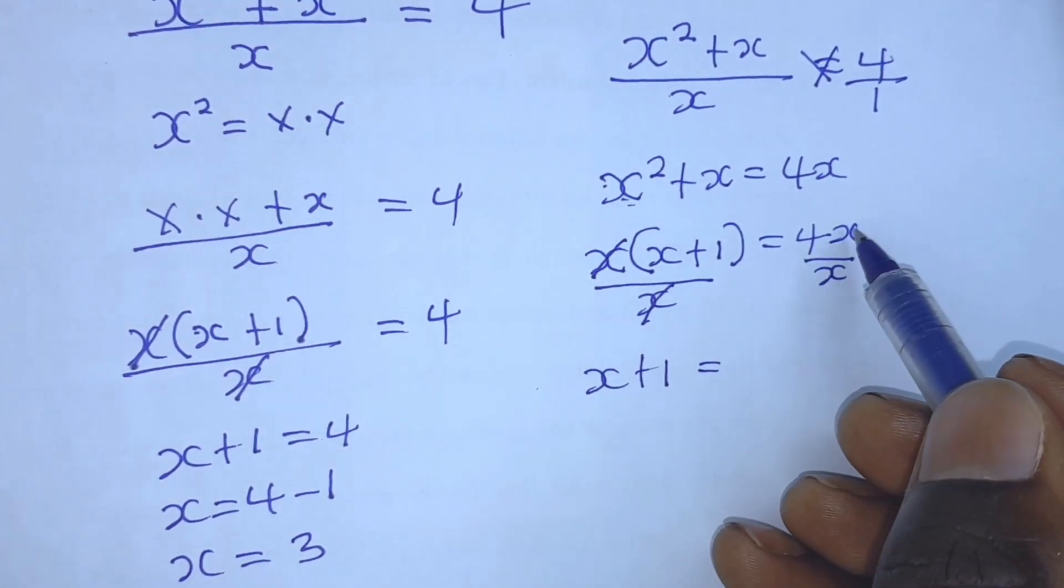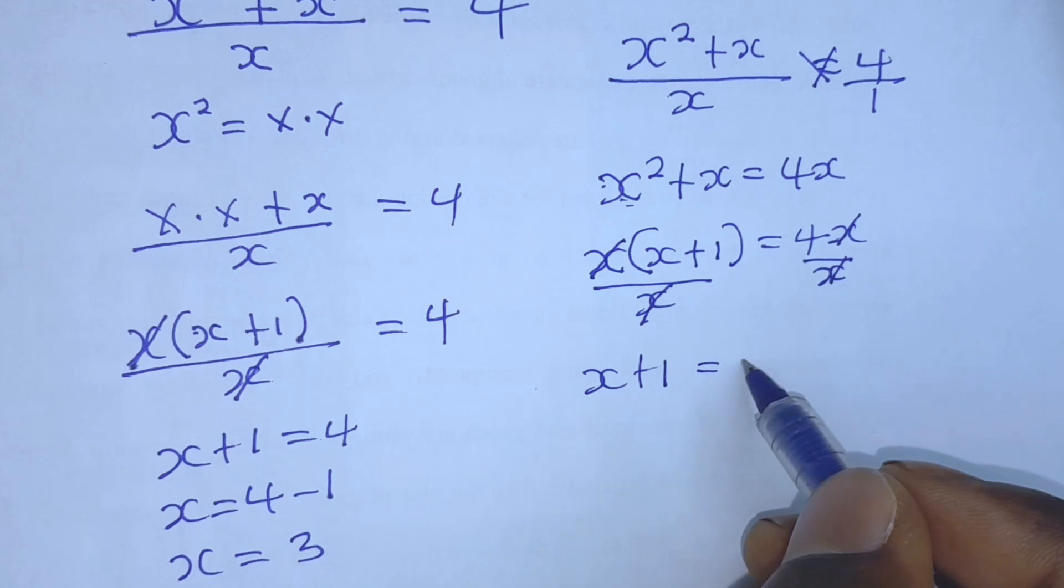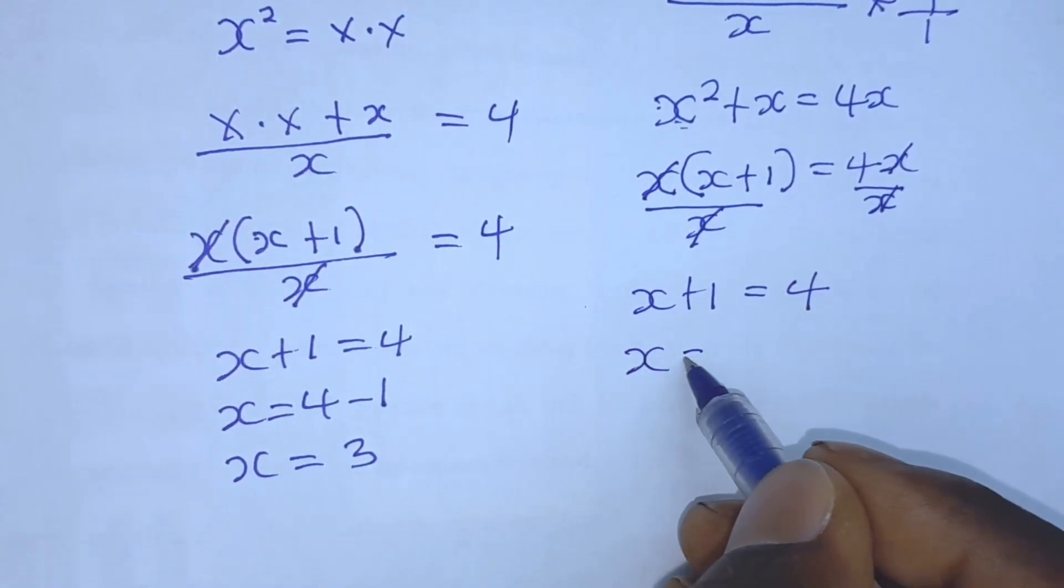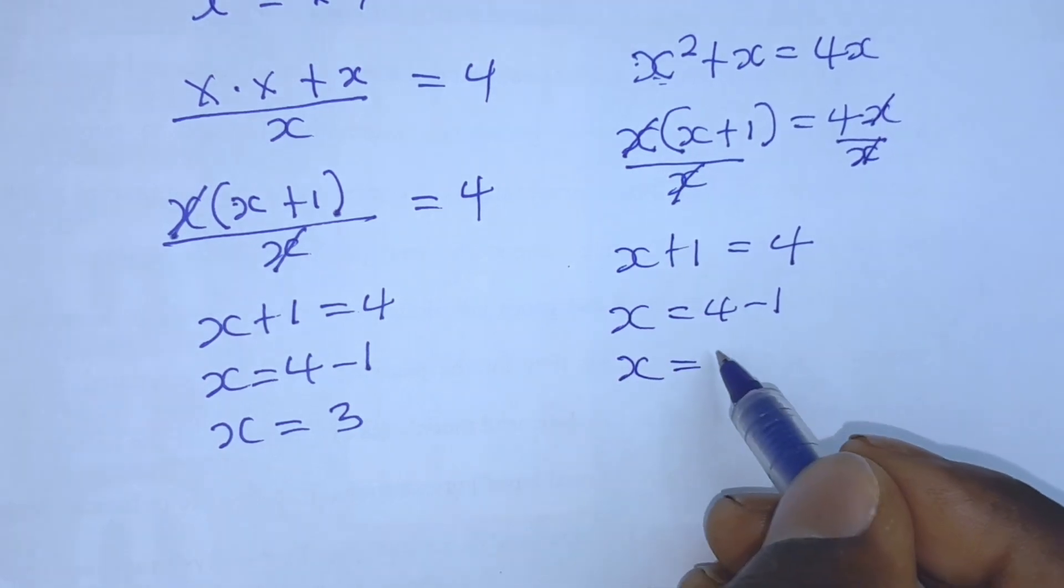We're left with x plus 1, which is equal to... Let's cancel the common factor here, that is x and x, which is equal to 4. And x is equal to 4 minus 1. And therefore, x is equal to 3.